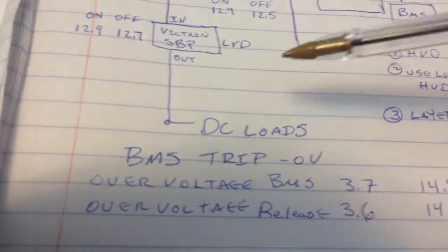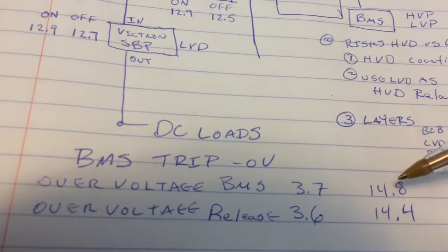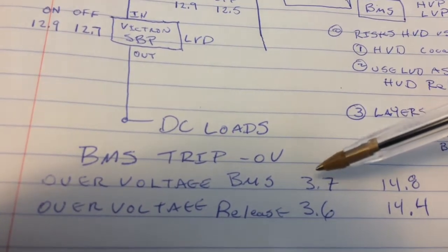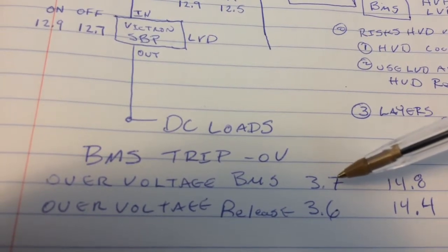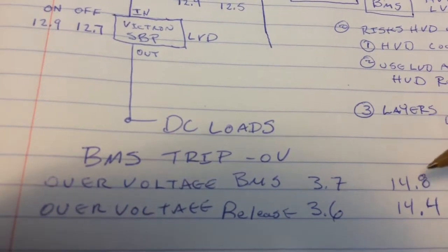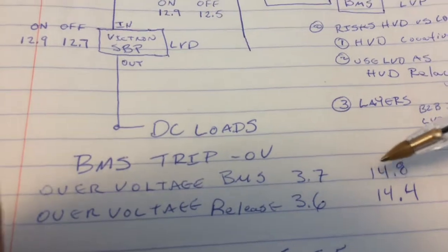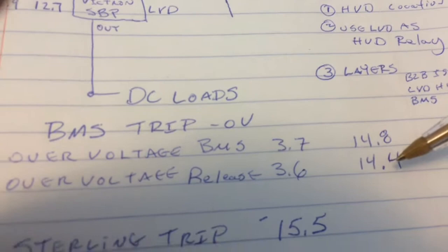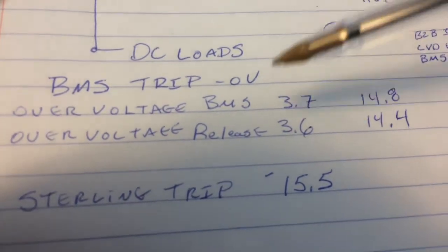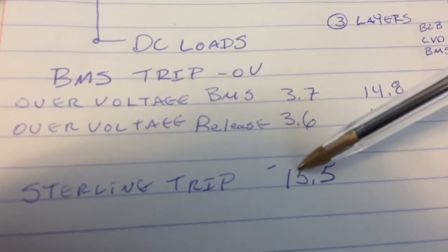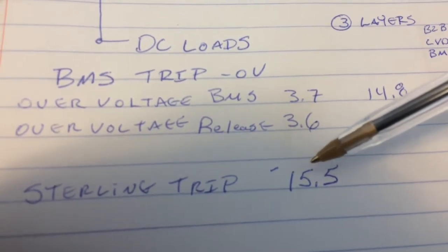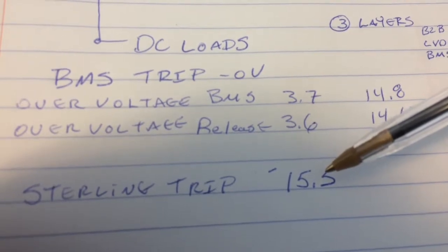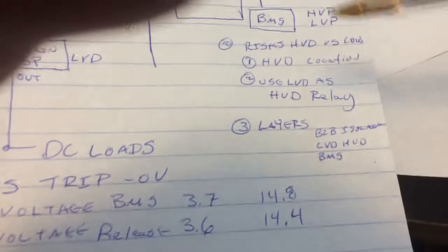So what right now my BMS is set to trigger for over voltage at 3.7 cell level over voltage and a 14.8 pack level. And then it recovers at 13.6 and 14.4. The Sterling right now, just out of the box, is set to trip at 15.5. Okay. So that does give you a little bit of extra level of protection.